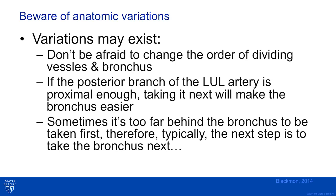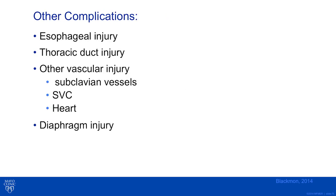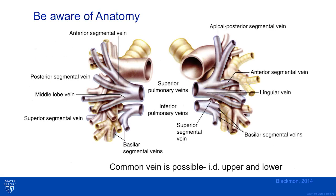Other complications that can occur include esophageal injury, thoracic duct injury, other vascular injuries such as subclavian vessel, superior vena cava, heart injury, or diaphragm injury. Always be aware that these are possible. Be aware of your anatomy. Always look at as many educational materials as you can to learn anatomic variations, as pulmonary artery and bronchial branches are not always predictable.